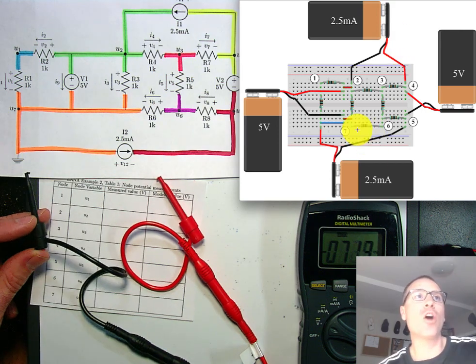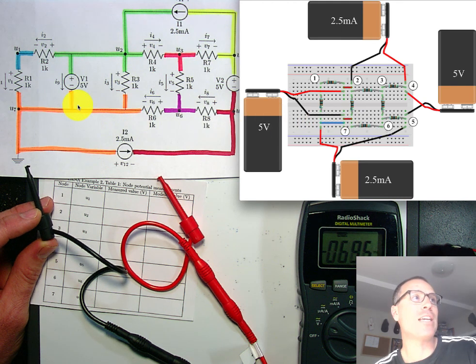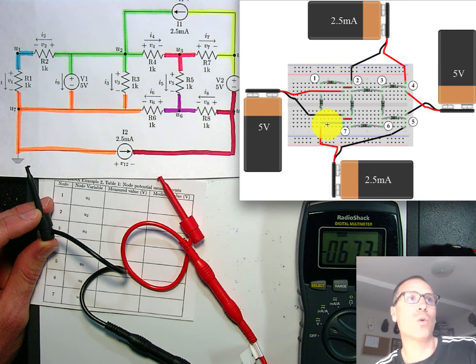We see on screen here that node 7 is going to be the bottom node, the one to which the negative lead of my first voltage source is connected.